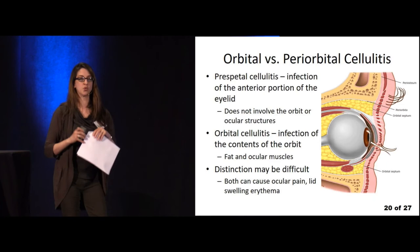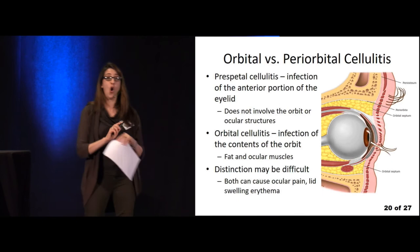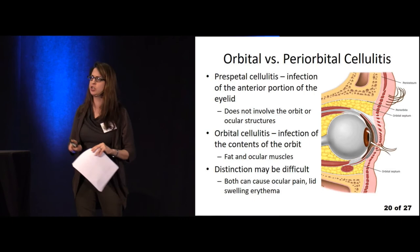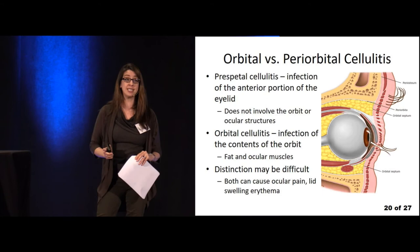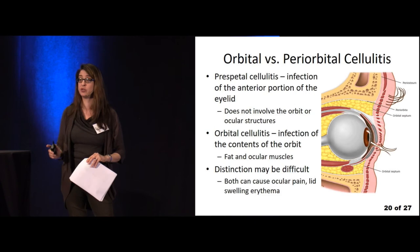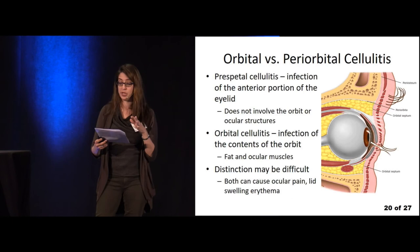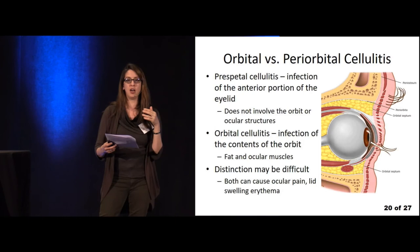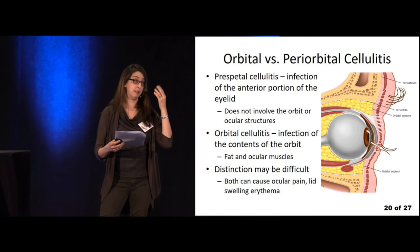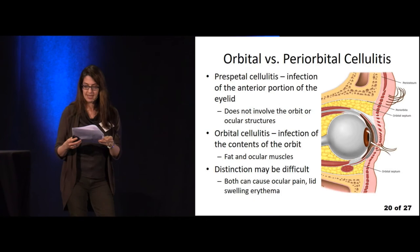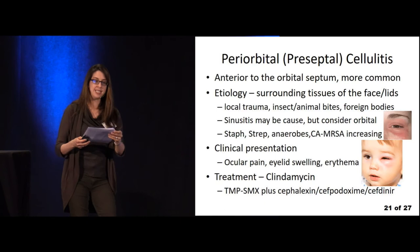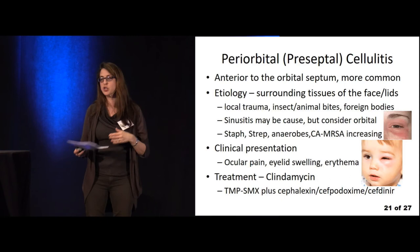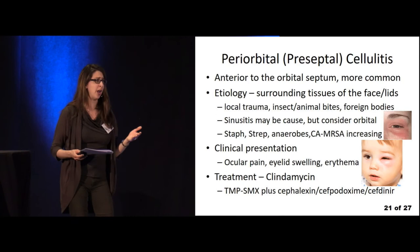Orbital versus periorbital cellulitis is really important. Periorbital cellulitis can be treated with antibiotics and the patient discharged, but orbital cellulitis can be life-threatening and cause blindness and death. Preseptal or periorbital cellulitis is an infection of the anterior portion of the eyelid — more common, usually caused by skin flora including Staph, Strep, and increasing community-acquired MRSA. Local trauma like insect bites or scratches can cause it. Treatment is clindamycin or Bactrim plus a cephalosporin.